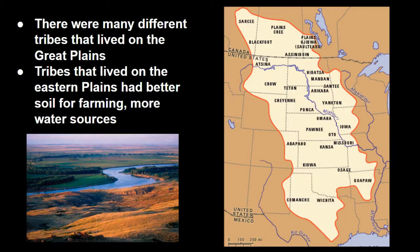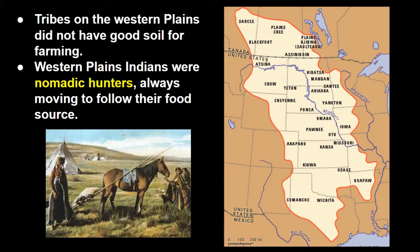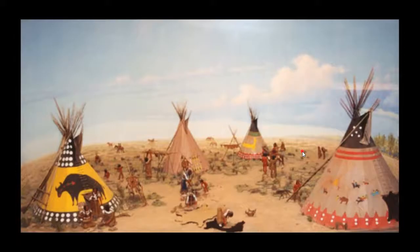There are many different tribes that lived on the Great Plains. The tribes on the Eastern Plains had better soil for farming and better sources of water, and some became farmers. But the tribes on the Western Plains did not have good soil for farming, so they were forced to become nomadic hunters, always moving to follow their food source. We're going to focus on these nomadic tribes.